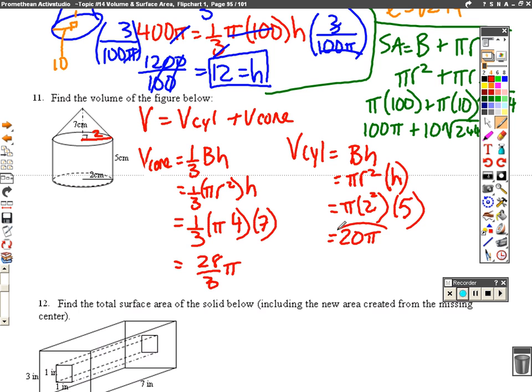So if we take our 20 pi and our 28 thirds and we add them together then we are going to get 20 plus 28 thirds, we are going to get 29.3 repeating so that's basically 29 and 1 third pi units cubed. Alright, moving on to number 12.